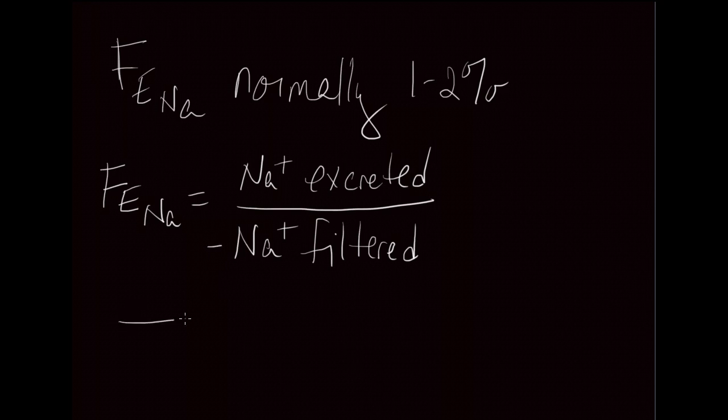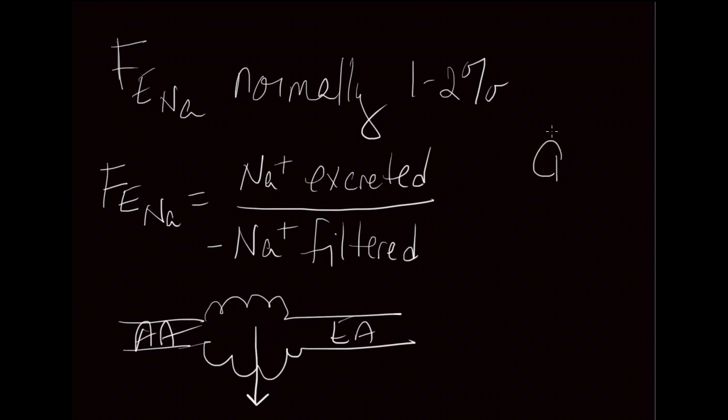If you've got a kidney, here's your afferent arterial and your efferent arterial, and this is the sodium that you filter. If you have a patient who has chronic kidney disease, they have a diminished GFR, which means their ability to filter solutes has gone down, including their ability to filter sodium. That makes this number here low. And because it's in the denominator, it makes this entity here high.